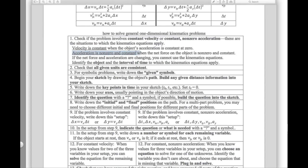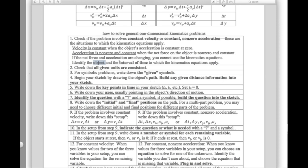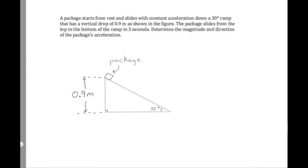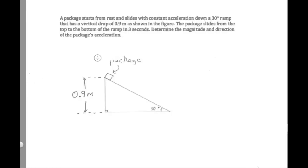The object experiencing that constant non-zero acceleration is the package, and the interval of time during which it experiences that acceleration is while it is sliding down the ramp. Next, we should check that our given units are consistent. We're given units of meters and seconds, and there's no contradiction between those, so those units are okay.